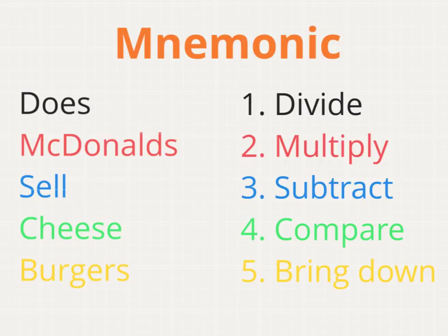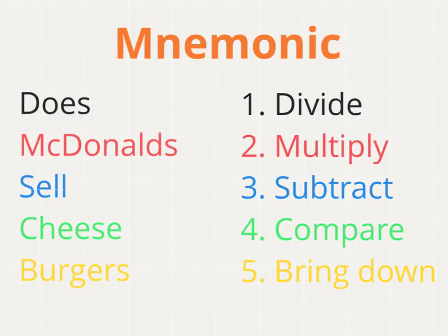When performing long division, there's a helpful mnemonic you may choose to use. A mnemonic is just a device or a tool used to remind you of steps in a process. The mnemonic that we'll use here is the phrase, 'Does McDonald's sell cheeseburgers?' The first letter in each of those words matches the first letter in the five steps to the long division process: divide, multiply, subtract, compare, and bring down.